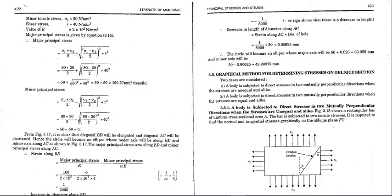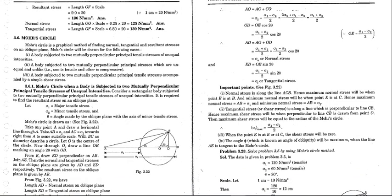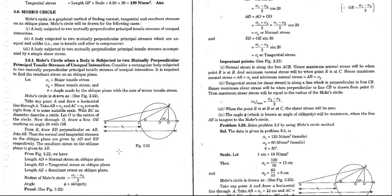As you have seen the analytical method of obtaining the principal and shear stresses, Mohr proposed a graphical method using Mohr's circle to obtain the values of normal and shear stresses for all three cases: whether the stresses are mutually perpendicular, whether they are tensile or compressive, and whether mutually perpendicular tensile or compressive stresses are accompanied by shear stress.